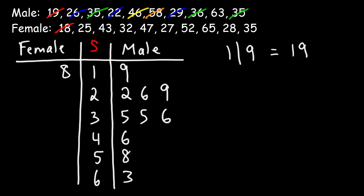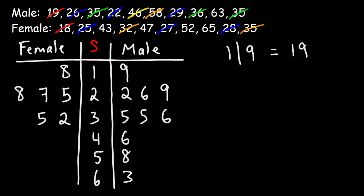Now let's move on to the next set of numbers. We have 25, 27, 28. So in ascending order, we write 5, and it's like writing it backwards, then 7, then 8. You need to increase the numbers in this direction. Next, we have 32 and 35, so we write 2 and 5 in the third row. After that, we have two numbers in the 40s: 43 and 47. And then we have 52, and finally 65.